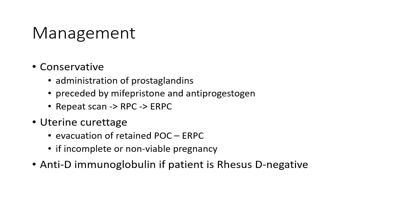Now let us see about the management of abortion or miscarriage. Conservative management involves administration of prostaglandins, preceded by mifepristone, an antiprogestogen. After conservative management, a repeat scan should be taken to look for retained products of conception. If retained products of conception are present, uterine curettage should be done. Uterine curettage, also known as ERPC, involves evacuation of retained products of conception and is done if incomplete or non-viable pregnancy is present.